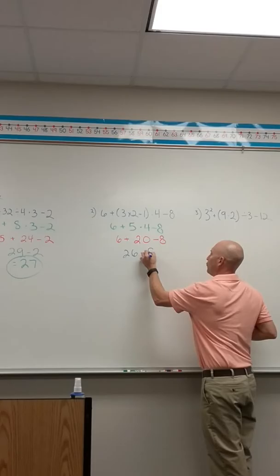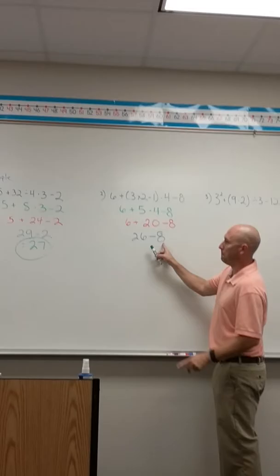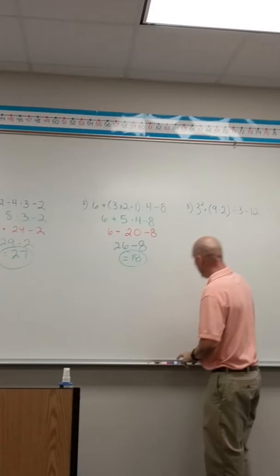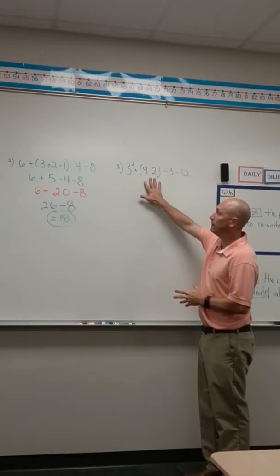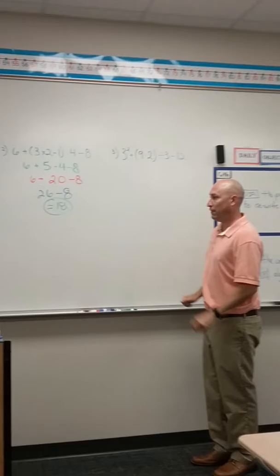Now I've got addition and subtraction left. I'm going to work it from left to right. In this case, I'm going to do 6 plus 20. 6 plus 20 is 26. Bring down the minus 8. And for my final step, I'm going to take 26 minus 8, giving me a final answer of 18.